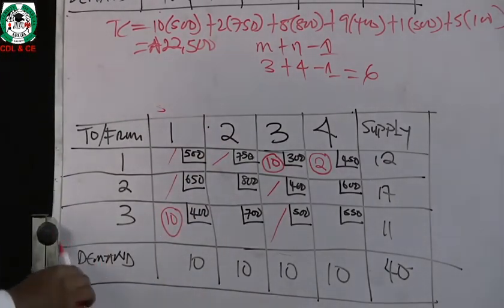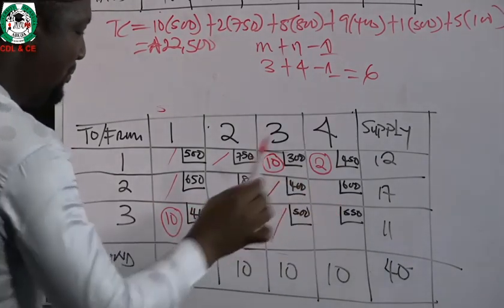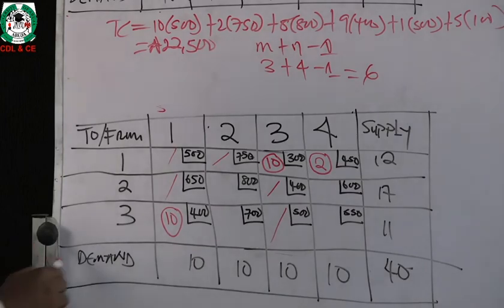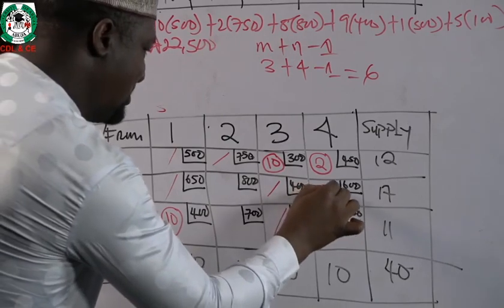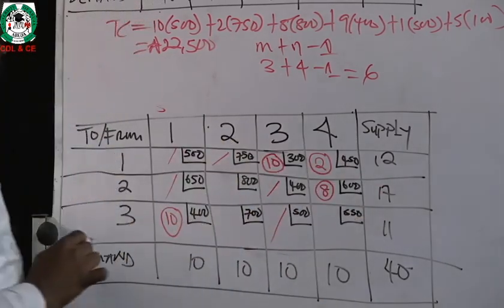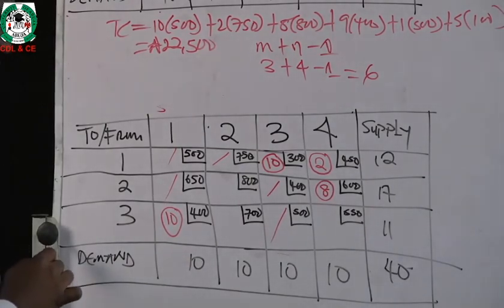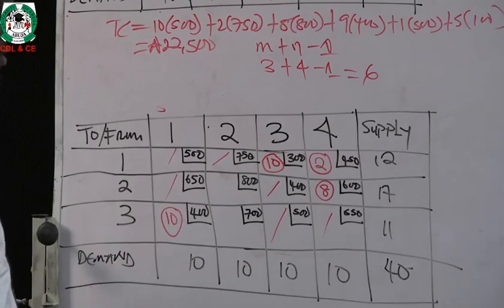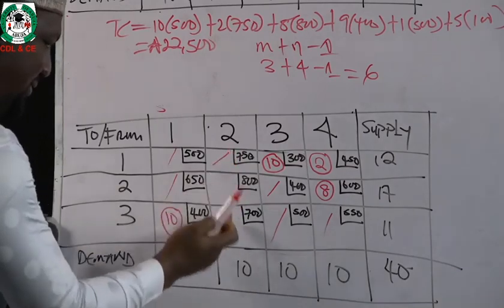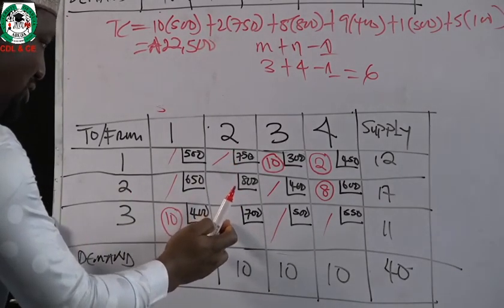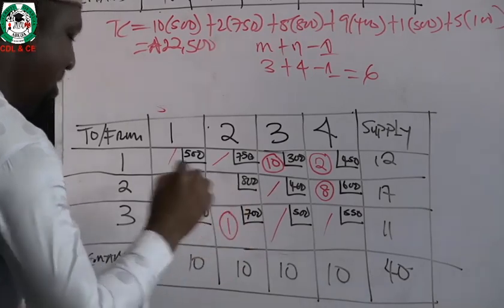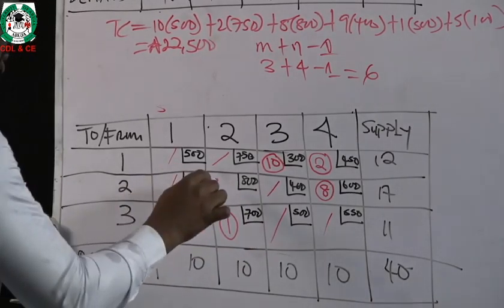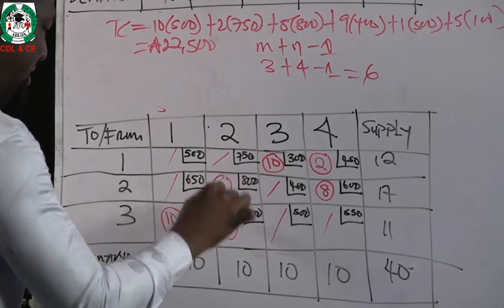Our next least cost is 450. We can't put 10 here because it won't fit the supply constraint, so the maximum allocatable is 2. This route is then deleted, leaving four viable cells. The next least cost is 600, and the maximum we can put here is 8, so that 2 plus 8 equals 10. Then for the remaining cells with cost 700, the maximum that can enter is 1, leaving only one cell to balance, which must be 9. Nine plus 1 equals 10, and 9 plus 8 equals 17, giving 6 shipping routes satisfying the rim condition.